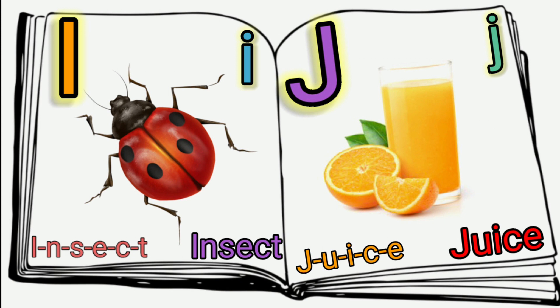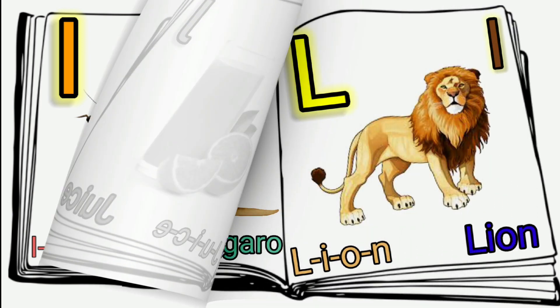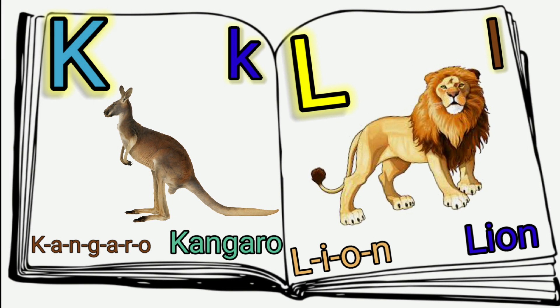J. J is Juice — J, U, I, C, E — Juice. J is Juice. K. K is Kangaroo.